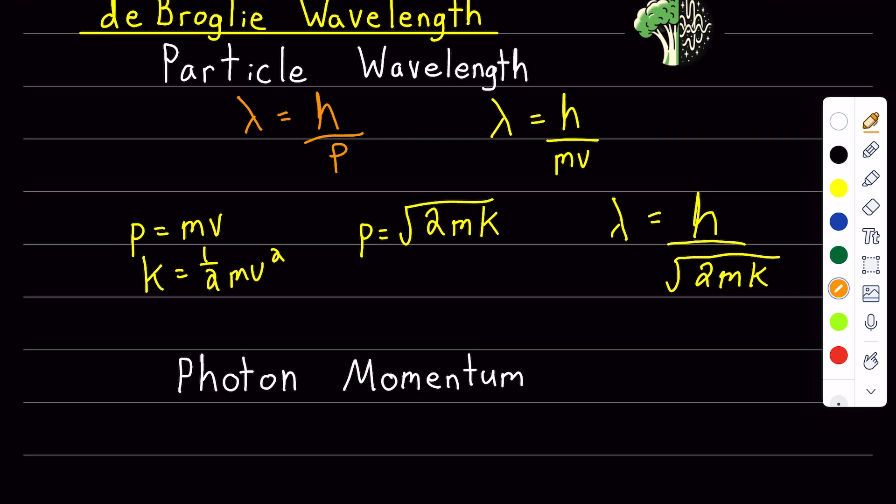On the other hand, waves, which don't have mass, have momentum. By rearranging the de Broglie wavelength formula, I can get a formula for the momentum of a wave.